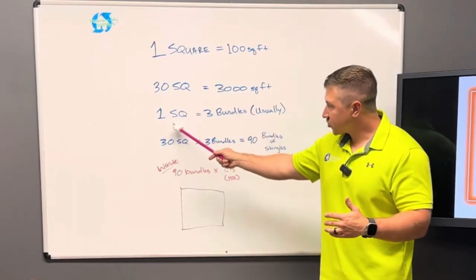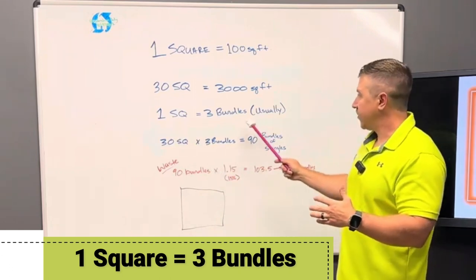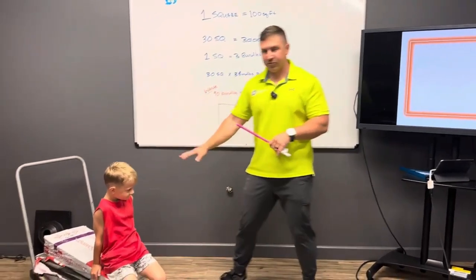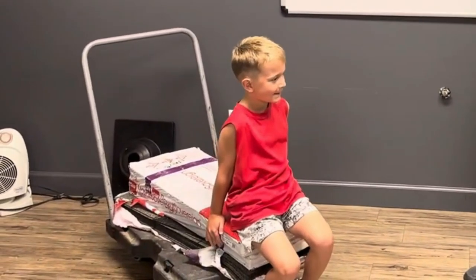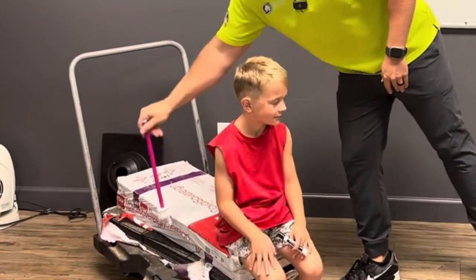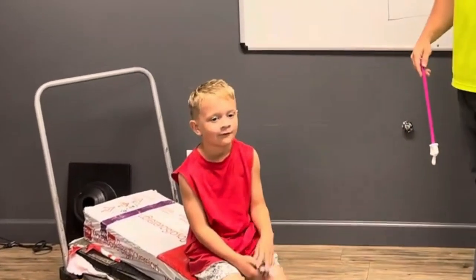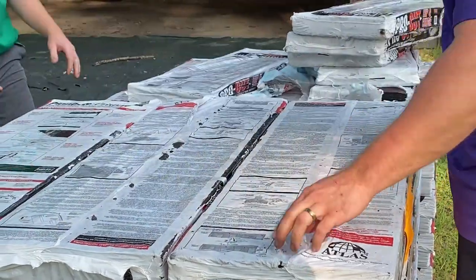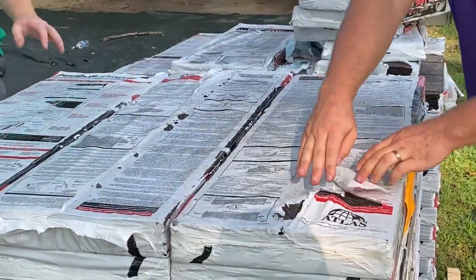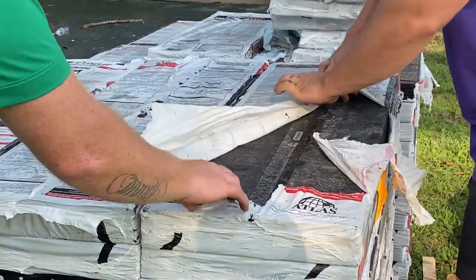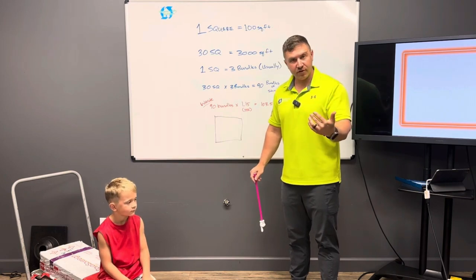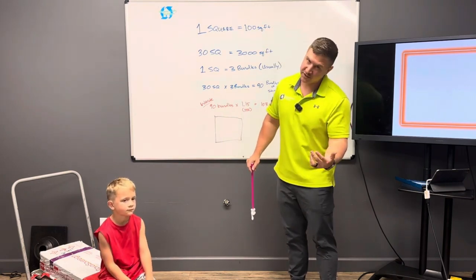One square is equal to about three bundles of shingles. Oliver is sitting on some three-tab shingles right now — these three bundles right here equals one square, approximately 100 square feet. Three-tab shingles and architectural shingles are very similar in that most of them are three bundles per square. When you get into higher-end designer shingles, some of them are four bundles per square, some are five bundles per square.